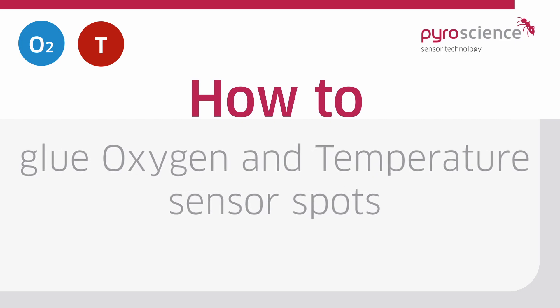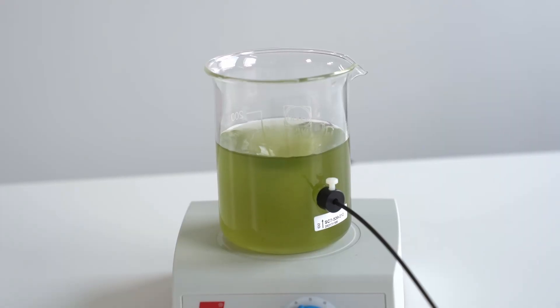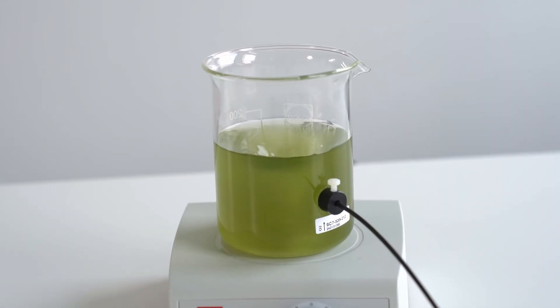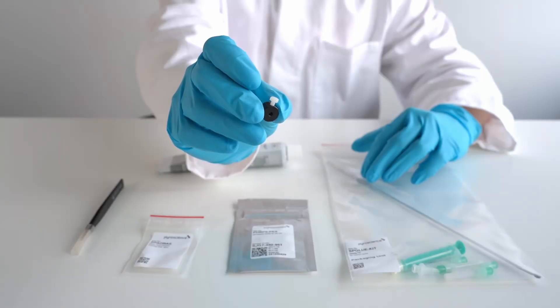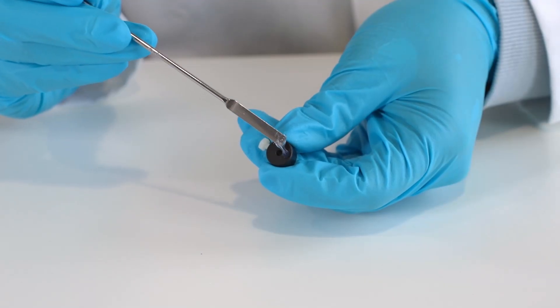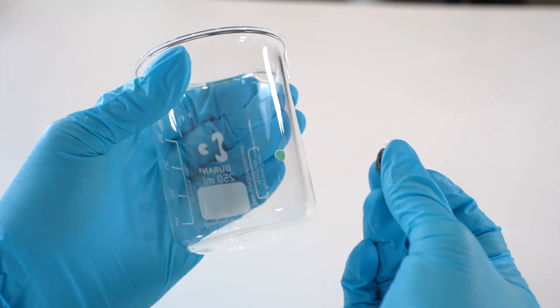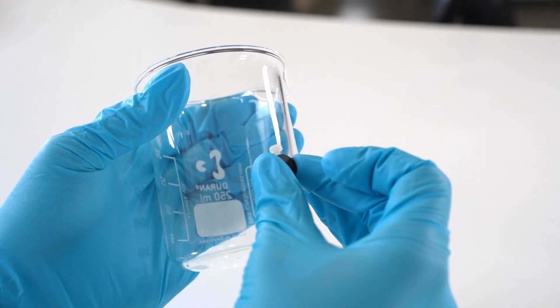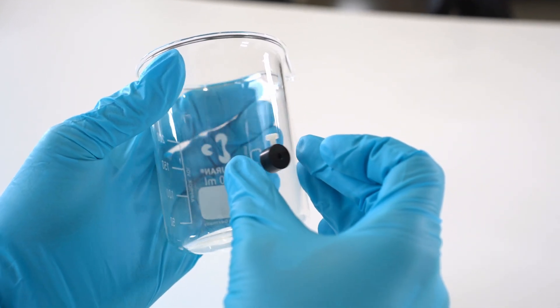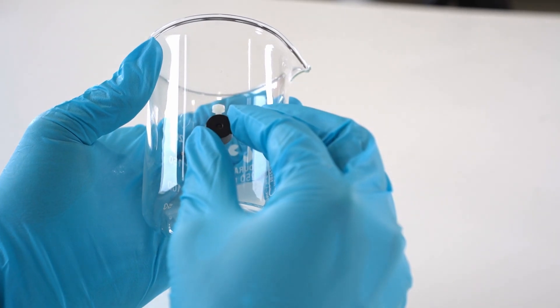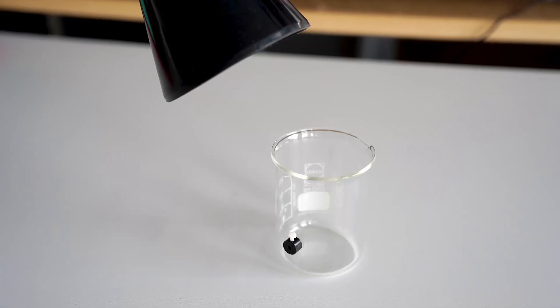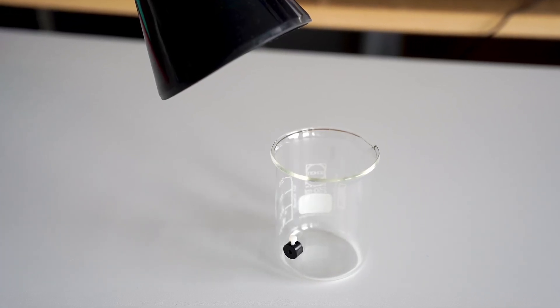For oxygen and temperature sensor spots please refer to our gluing guide for oxygen and temperature sensors. To be able to connect readout fibers to the sensor spot you need to fix the sensor spot adapter SPOT-BUS. For this, add some of the silicone glue on the surface of the spot adapter and press it on the outer wall at the sensor spot position. Let the fixed sensor spot and spot adapter dry for at least 12 hours. Ensure good ventilation as acetic acid is released during drying.